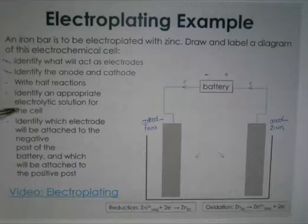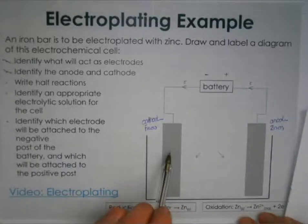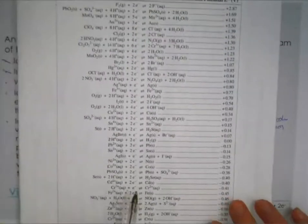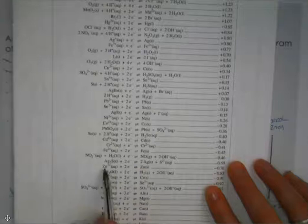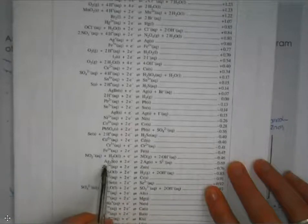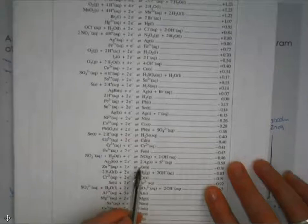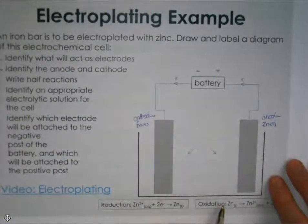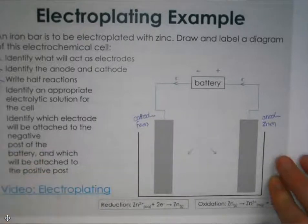Next, write the half-reactions. At the cathode we want zinc being plated on, so we need the reduction half-reaction: Zn²⁺ (aq) + 2e⁻ → Zn (s). At the anode, we have the oxidation half-reaction: Zn (s) → Zn²⁺ (aq) + 2e⁻. So oxidation and reduction are the same reaction in reverse, which is fine because it's a non-spontaneous reaction. For the electrolyte solution, combine zinc with nitrate: Zn(NO₃)₂, which dissociates into Zn²⁺ ions and NO₃⁻ ions.